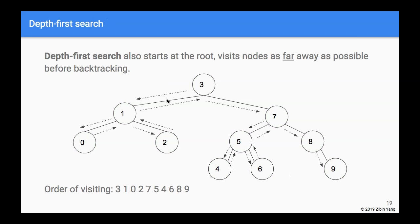A depth first search does kind of the opposite of breadth first search — it will go down and traverse as far as possible down the tree before going back up. Starting at three, it will visit one and then keep going to the children rather than going to the sibling, until there's no more child. So we go to zero, and once we reach the end we go back up and visit the other child, then back up to visit the root's other child, going down as far left as possible, backtracking, and then going down on the right. That's called a depth first search.